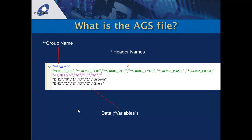So what is an AGS file? This is an AGS3 file. Simply, we have group names, header names, and then the data. A group name is the equivalent of a spreadsheet tab — this one is SAMP, short for sample. Header information is all separated by commas and in double quotes: hole ID, sample top, sample ref, sample type, sample base, and sample description, all in an eight-letter code. These are like columns in your spreadsheet.